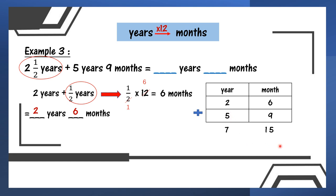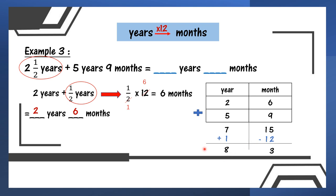Now look at the months — 15 is already more than 12. Satu tahun ada 12 bulan; 15 sudah lebih daripada 12. So I need to minus 12 and then plus 1 year — 12 bulan ni saya tukar kepada tahun. So 15 minus 12 is 3, and 7 plus 1 is 8. The answer is 8 years and 3 months.